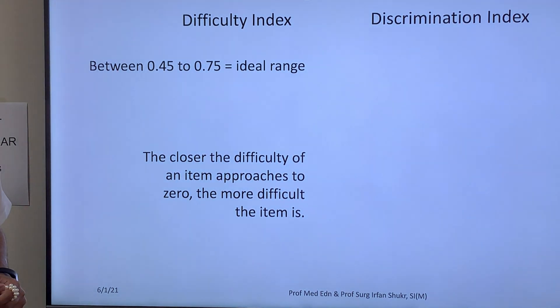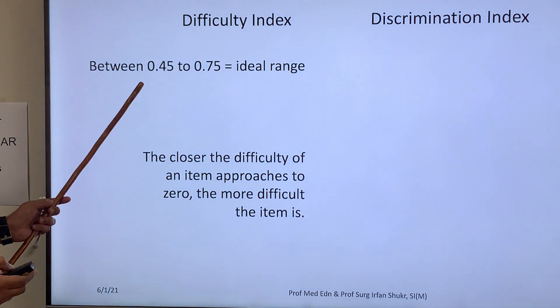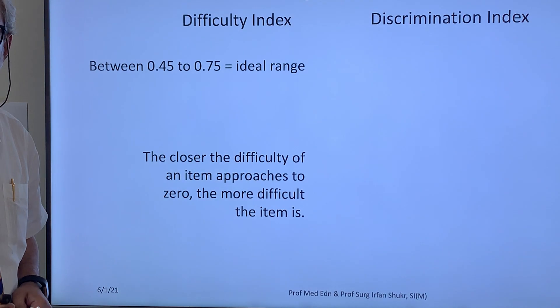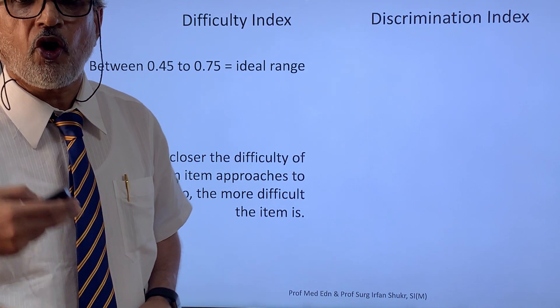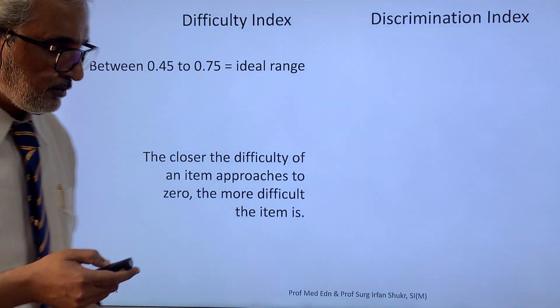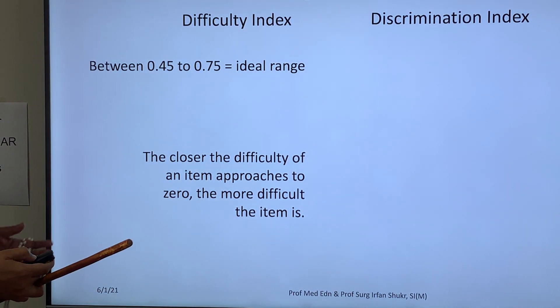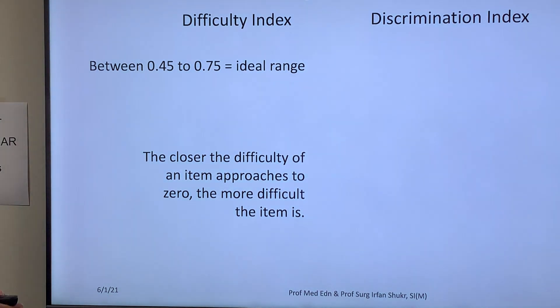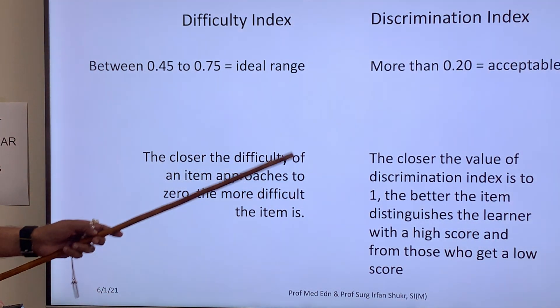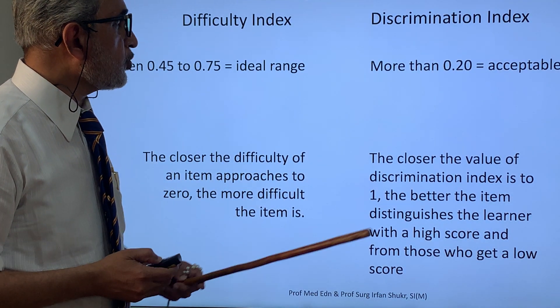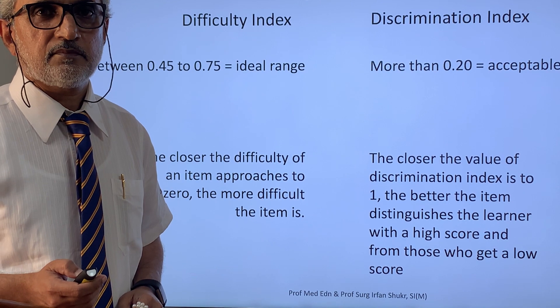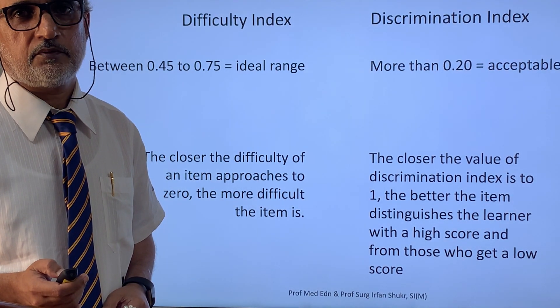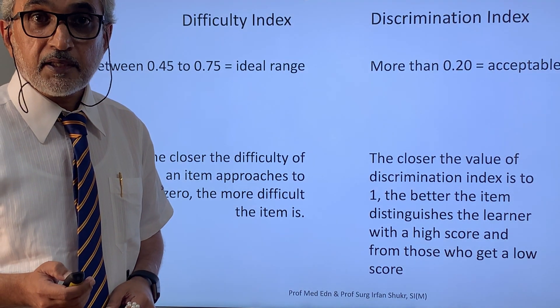The ideal range for the difficulty index is 0.45 to 0.75, because this is the range in which the difficulty of the question is moderate — not too easy or too difficult — and we want the majority of questions to be in this range. For the discrimination index, more than 0.20 is acceptable. If it is less than 0.20 or negative, then possibly it is not acceptable. Thank you very much. Assalamu alaikum.